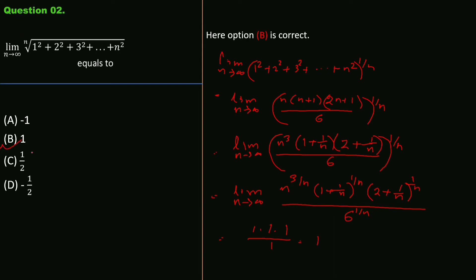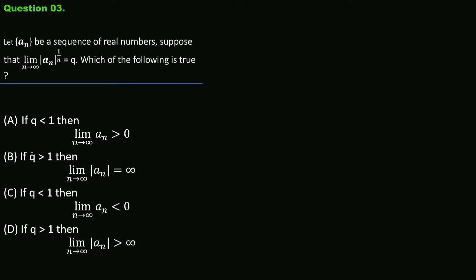Question number 3: let {aₙ} be a sequence of real numbers such that lim(n→∞) |aₙ|^(1/n) = q. Which of the following is true? Options: if q < 1 then lim aₙ > 0; if q > 1 then |lim aₙ| = ∞; if q < 1 then lim aₙ < 0; if q > 1 then lim |aₙ| > ∞. Option B is correct.